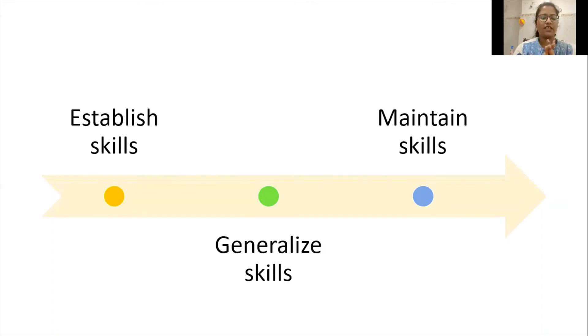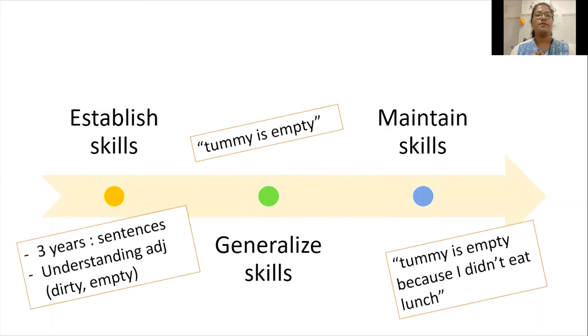So in therapy what we follow is this: we teach some skills and then we make sure our child uses those skills in everyday life, and we also have to make sure that they're able to hold on to that skill for future learning also. I'm going to give you an example so you understand this better.